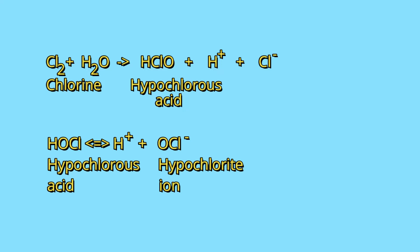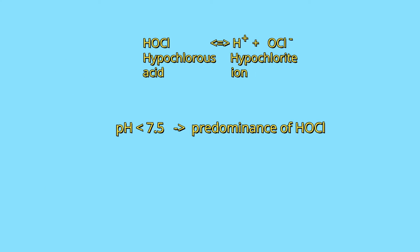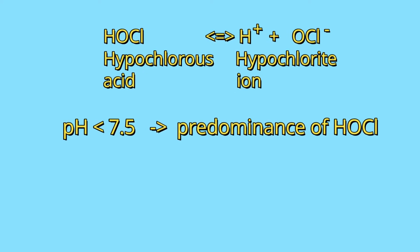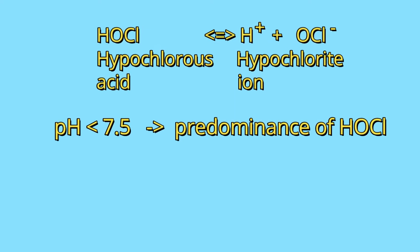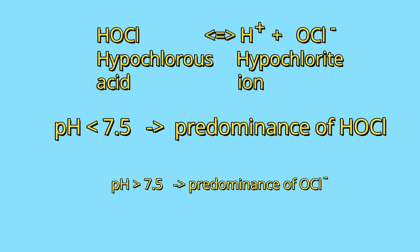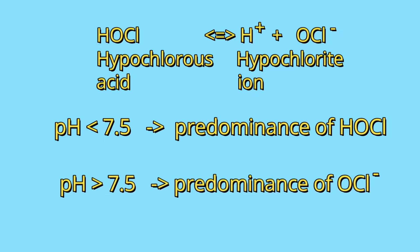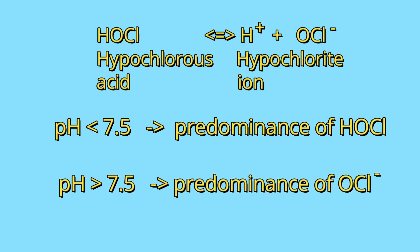Hypochlorous acid dissociates, originating hypochlorite ion. For pH values below 7.5, there is a predominance of hypochlorous acid, while for pH values above 7.5, hypochlorite ion is the dominant species.